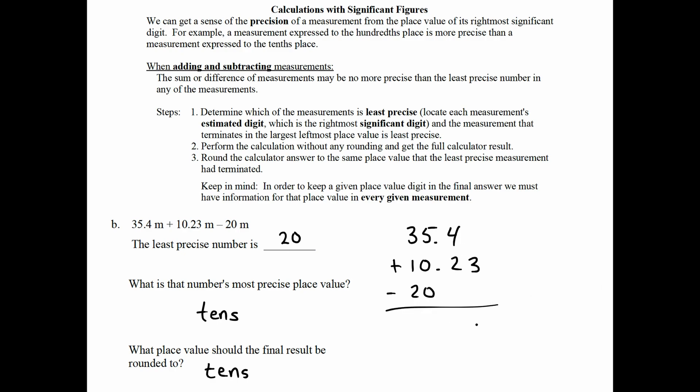Let's go ahead and set up the vertical addition here. I'll carry out the calculation. I get 25.63. So now all we have to do is figure out what place value we need to round to. And it's actually the tens place. And our five can be used to either round up or stay. Our final answer is actually going to be 30 meters.